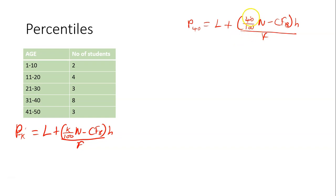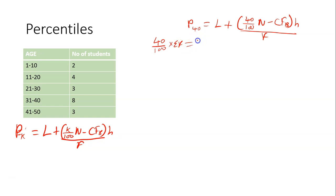We need to know the 40th percentile class first before we can find the exact 40th percentile. To get the 40th percentile class, we say 40 over 100 times sigma F, which gives us 40 divided by 100 times 20. And 40 over 100 times 20 is 8 — meaning the 8th position.